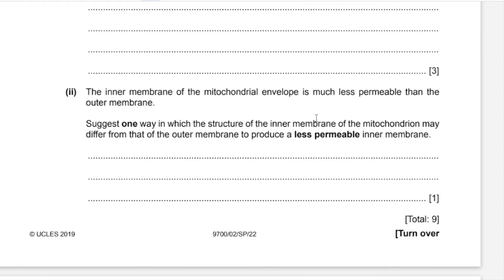It is essential that you write the term 'types' because there might be many proteins of the same type, meaning they are only capable of transporting one type of substance. That would still make the membrane less permeable, as it would not be capable of transporting different types of substances.